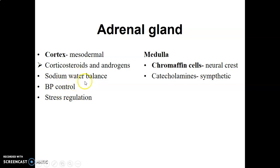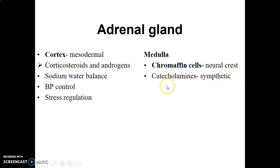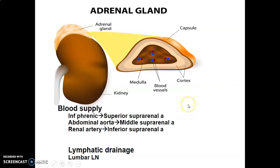The glucocorticoids, also a corticosteroid, help with stress regulation, and the androgens are responsible for secondary sexual characteristics in the body. The medulla contains chromaffin cells. Chromaffin cells are of neural crest origin and they produce catecholamines, which are neurotransmitters or hormones responsible for sympathetic control in the body.